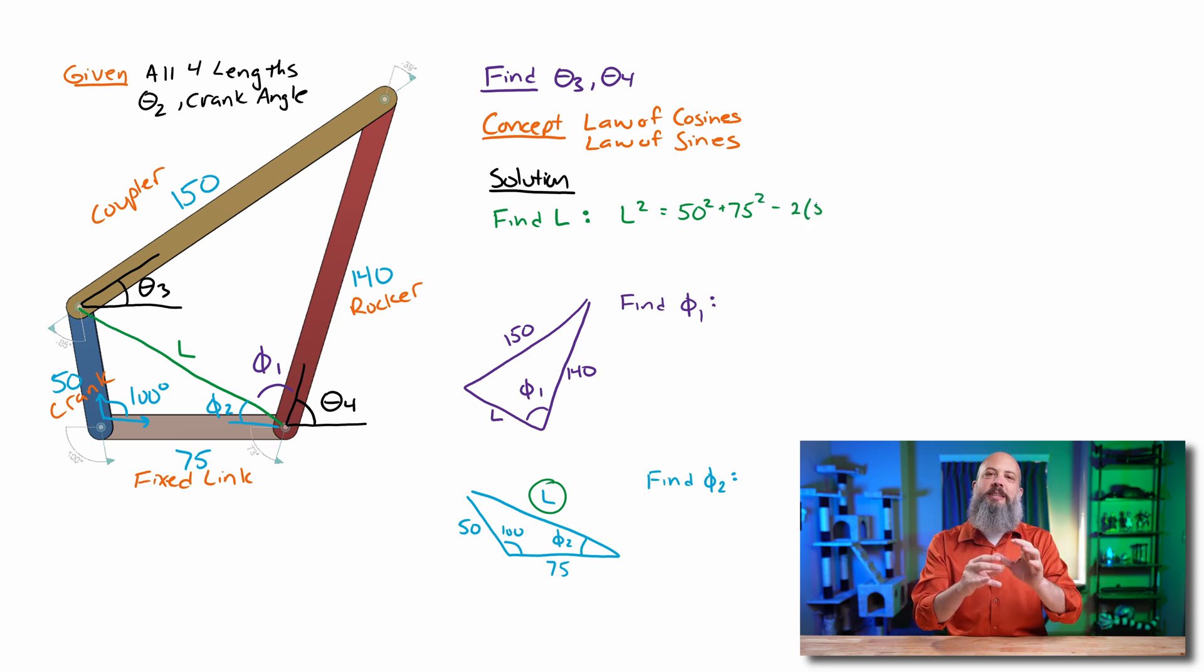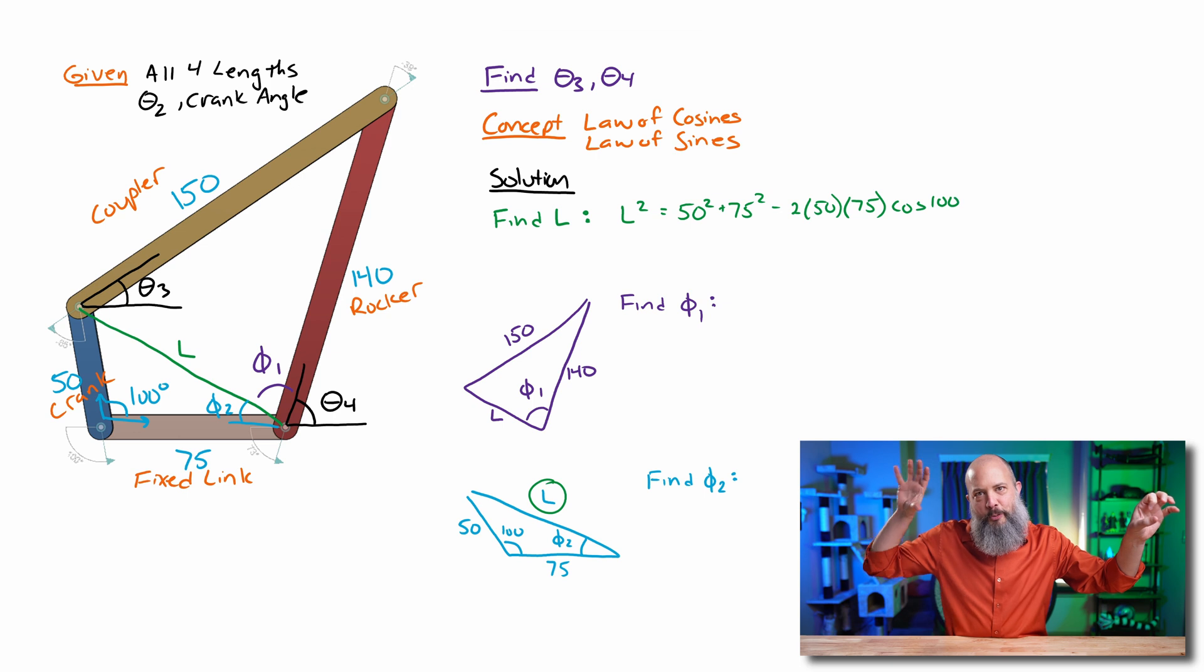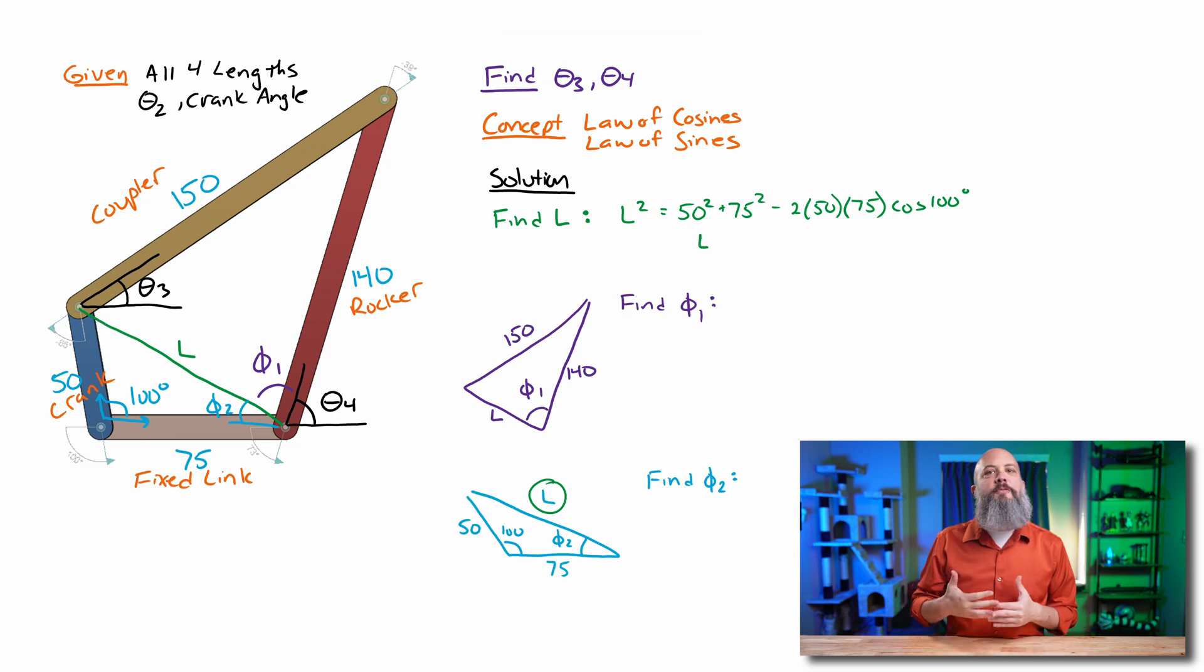Main thing to remember is the c squared that's on the side by itself, that is the length that is opposite the angle that you are doing, the cosine theta at the end. That cosine term has to go with the one on the left side by itself. So to solve for L, I'm going to use law of cosines with my lower triangle because that's where I have the most information. That's where I know the 100 degrees. So L is my side opposite the 100 degrees. That's why L squared is on the left. And the other sides are on the right. And I get a value for L, 97.09.